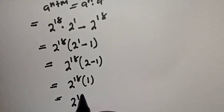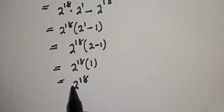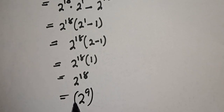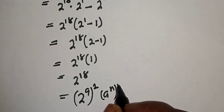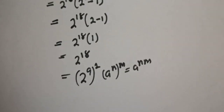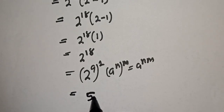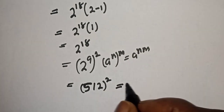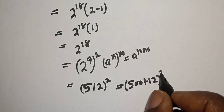This is equal to 2 raised to power 18 bracket 1. Then 2 raised to power 18 is 2 raised to power 9, to the power of 2. That is, if you have a raised to power n to the power of m, it equals a raised to power n times m. Then, 2 raised to power 9 is 512 squared.